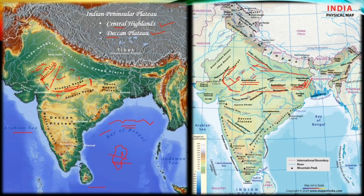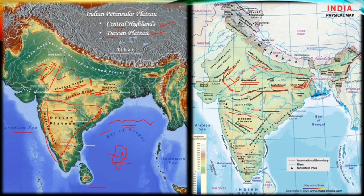The second division, the Deccan Plateau, is a triangular landmass lying to the south of the Narmada River. On its right side it starts from the Satpura Range, and extends eastward to the Mahadev and Maikal Ranges. The Deccan Plateau is higher in the west and slopes gently eastwards, as can be seen from the eastward flow of all its rivers.